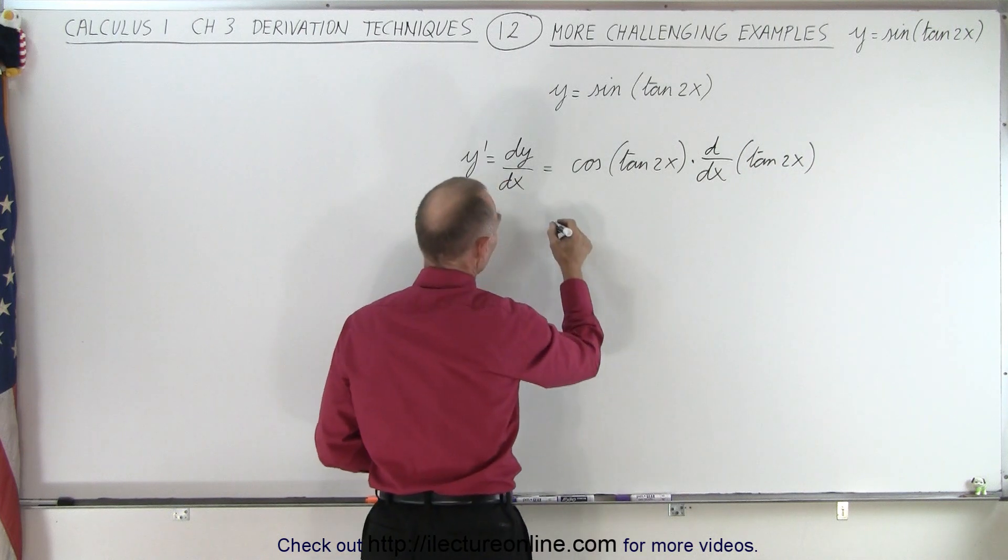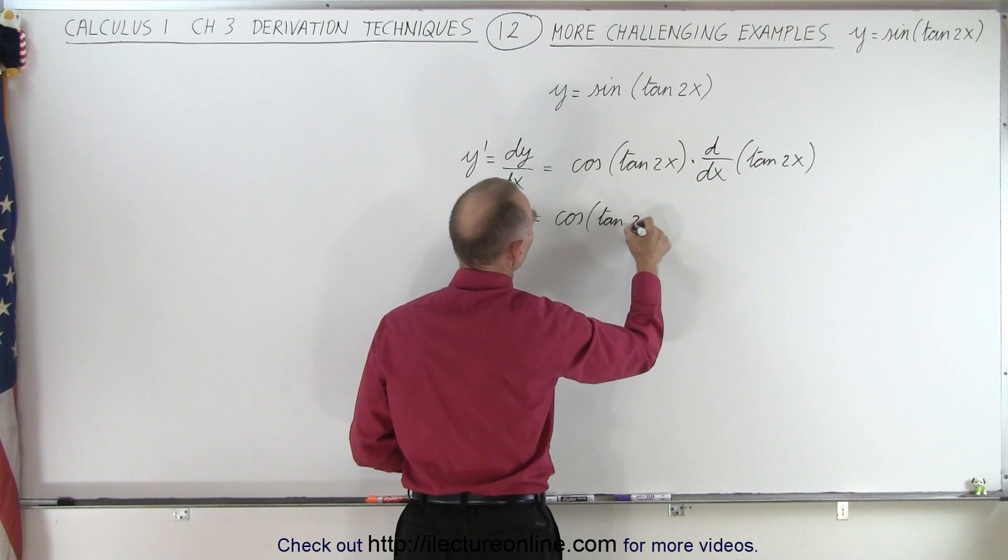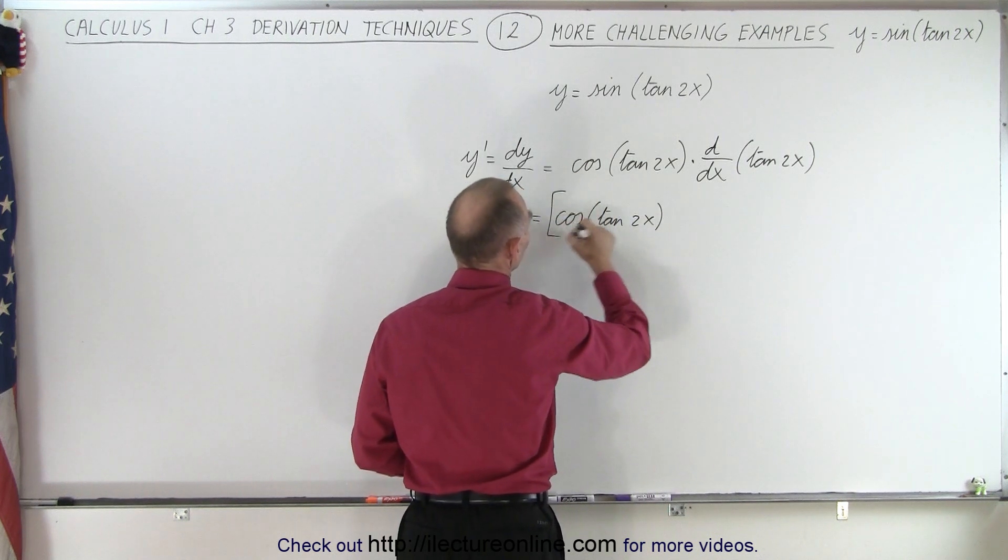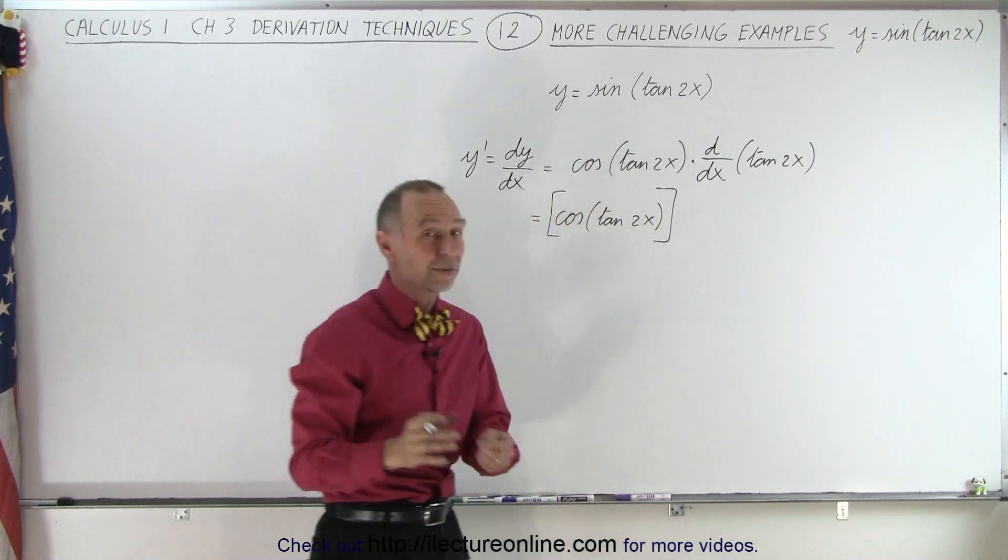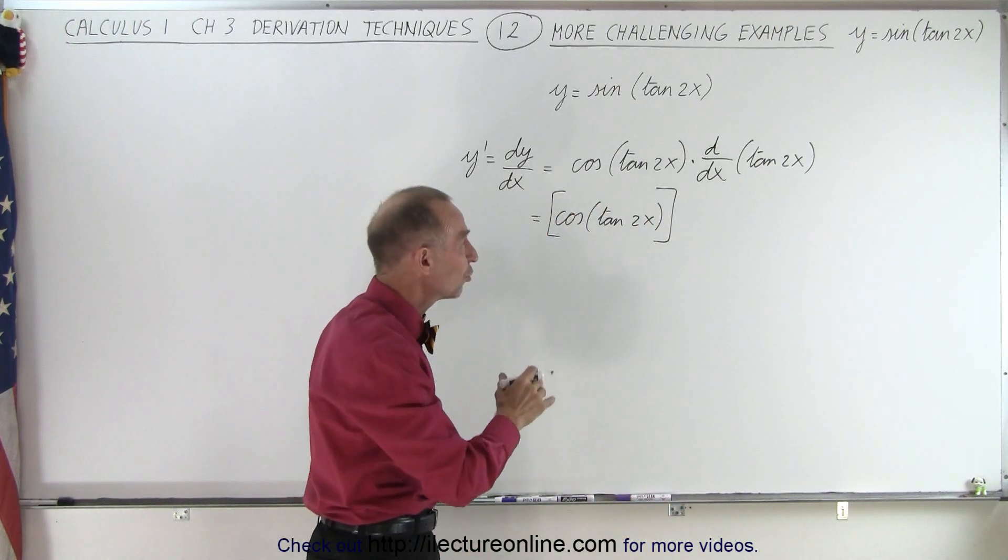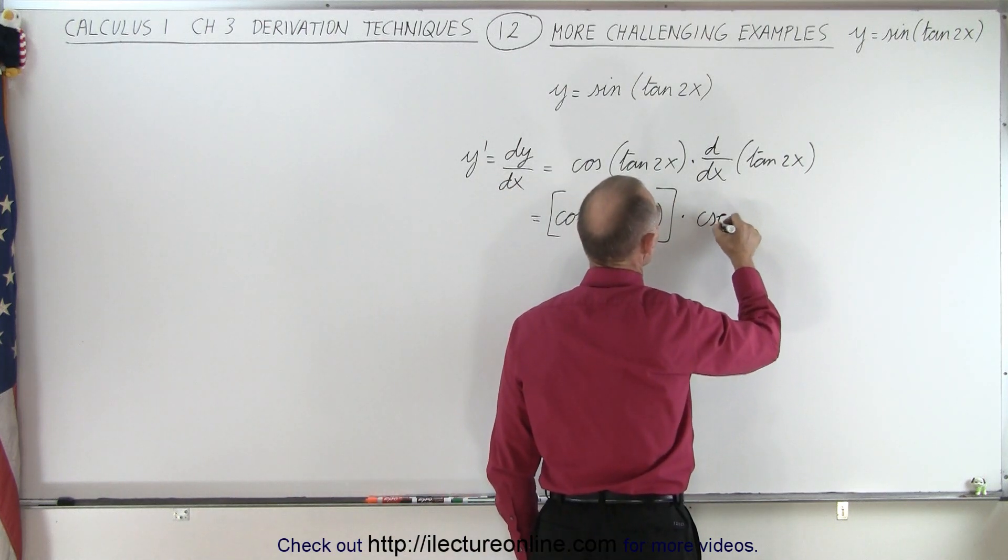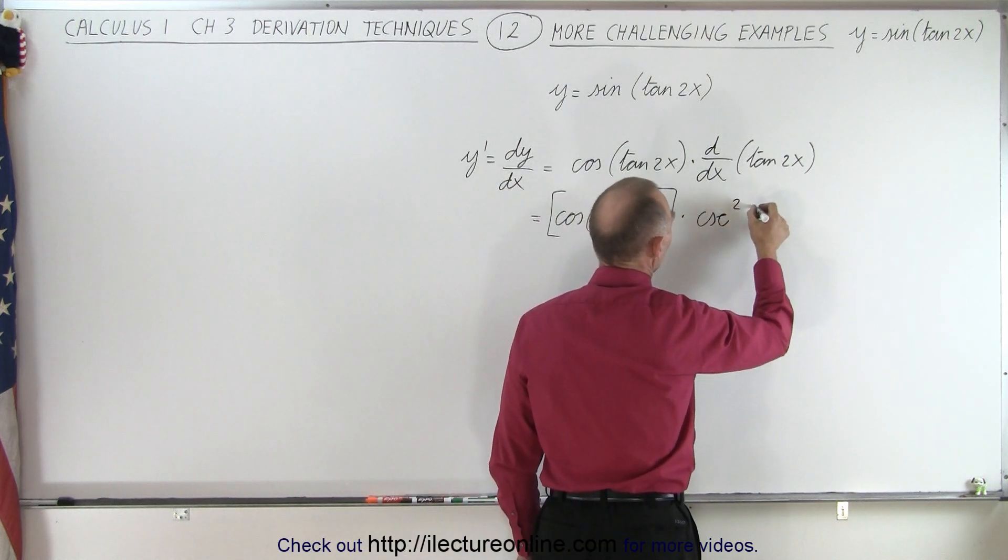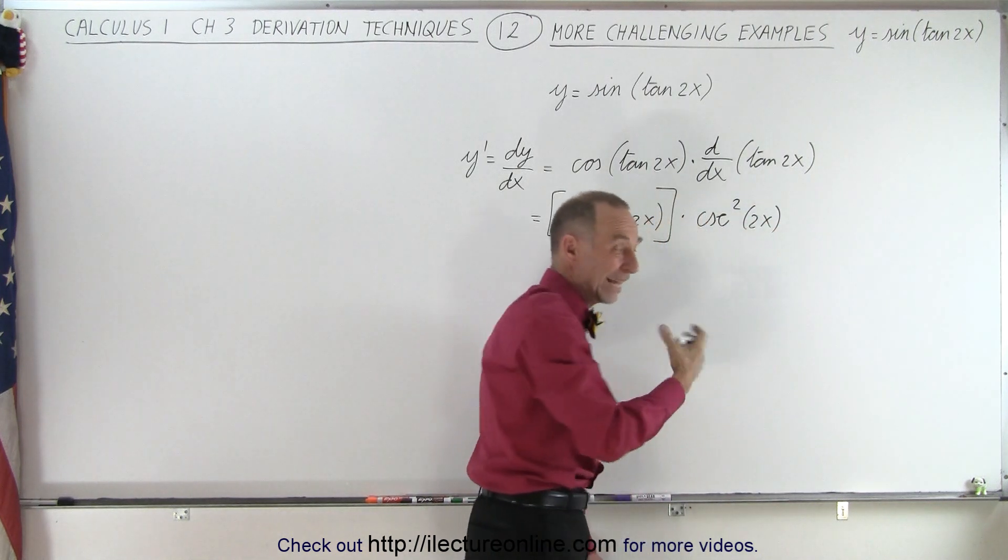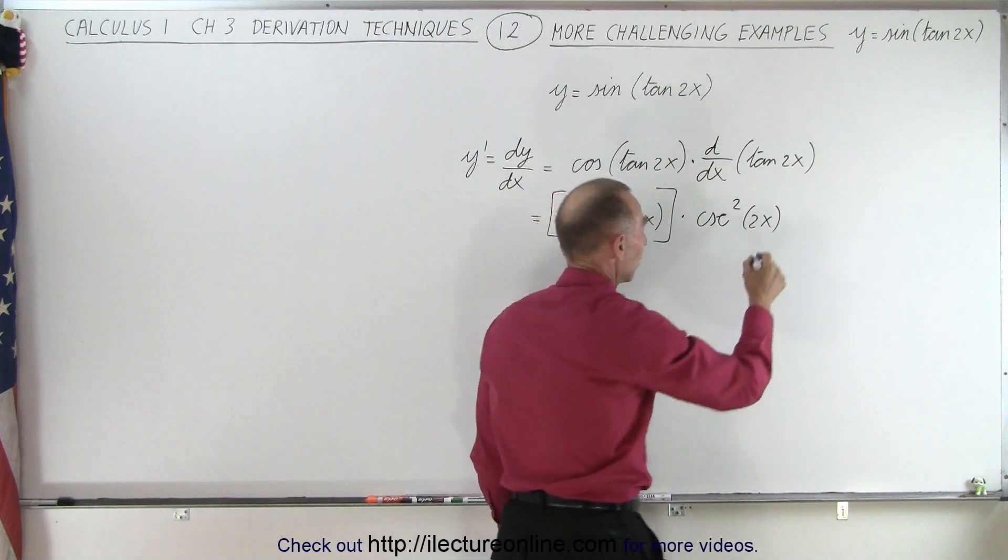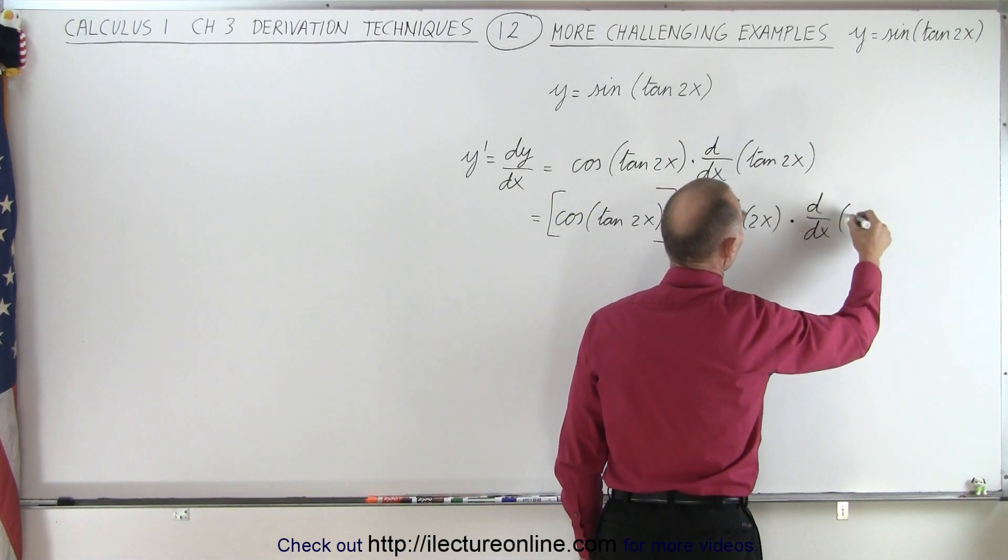And so that becomes the following. So this becomes the cosine of the tangent of 2x. And I'll go ahead and put that in brackets like that. Times the derivative of this. Now the derivative of the tangent is the cosecant squared. And so that would be times the cosecant squared of 2x. But now we have to take the derivative of that argument because it's not just an x, it's a 2x. So now we write times the d dx of 2x.